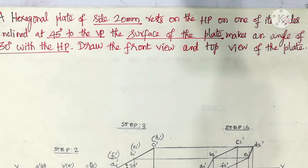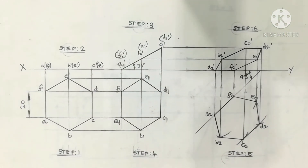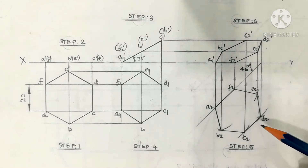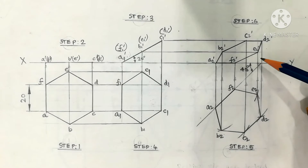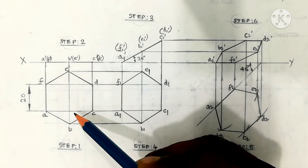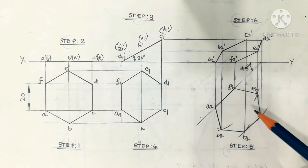Regarding the procession of planes, the given object is a hexagonal plate — also called a hexagonal lamina — of side 20mm, meaning each side is 20mm. The corresponding answer diagram is given in this video. It has 6 steps to be followed to complete the final front view and final top view. These two diagrams are the answer diagrams. You cannot get this answer directly; you have to follow the sequence: Step 1, Step 2, Step 3, Step 4, and then the final front view and corresponding top view, as shown in this video lecture.